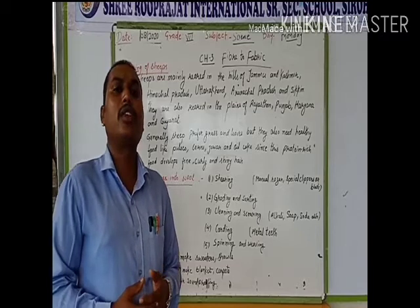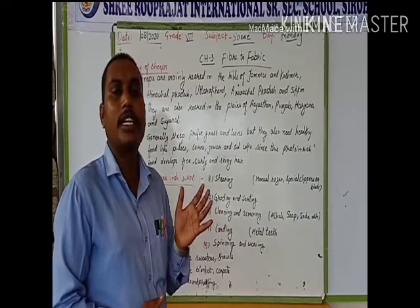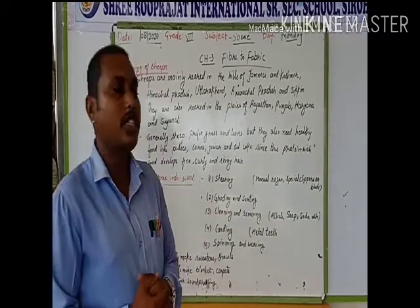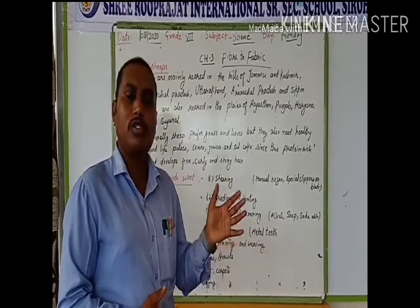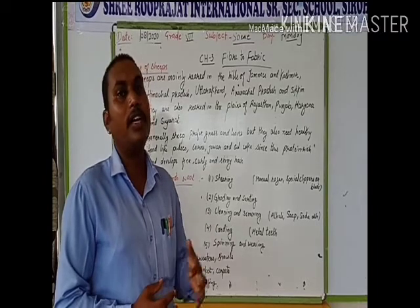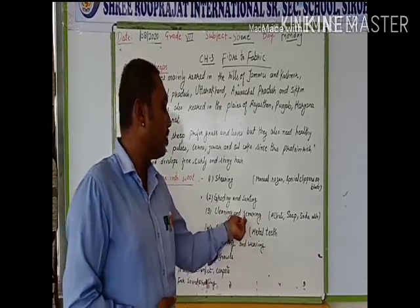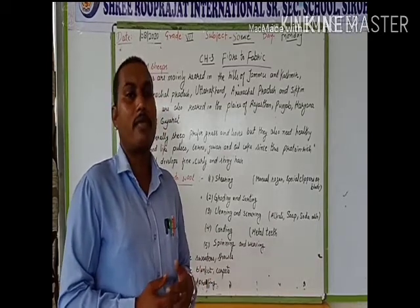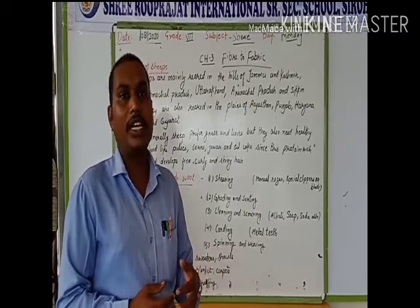After that, cleaning and scouring. The woolen fibers we get from the sheep are cleaned for the removal of dirt and grease. The process of removing dirt and grease from the sheared woolen fibers is called cleaning. After cleaning, the fibers are washed in an alkaline solution containing alkali and soda. The process of removing excess water from the sheared wool is known as scouring, done by using scouring machines. After scouring, the woolen fibers are finished with oil so that they become shiny in appearance.